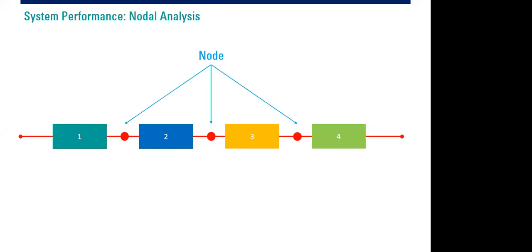We have a node between each block. Between block one and block two, we have the intersection, the interface — we have the node there. So we have node one, node two, and node three.